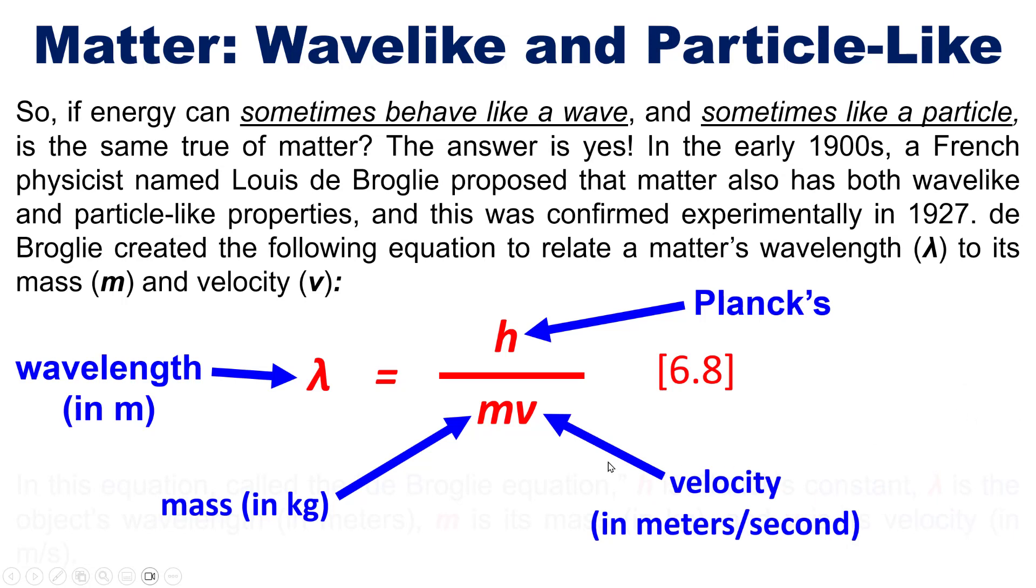Now please do not confuse this term with the Greek nu I showed you earlier. The Greek nu is frequency and has units of per seconds or inverse seconds. This is not a nu. This is a v, an English letter v, which is velocity. Confusing? I know.